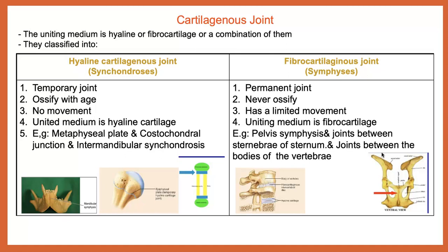Looking from left to right: the hyaline joint is a temporary joint, while the symphysis is a permanent joint. Hyaline cartilage becomes ossified with age — synostosis — however, the symphysis never ossifies. There is no movement in the hyaline joint, whereas there is some limited movement in the symphysis joint. The uniting medium is hyaline cartilage for the synchondrosis, and fibrocartilage for the symphysis.